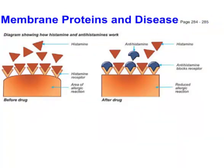Another example involves allergies. Some people take antihistamines, and here's how that works: the cell membrane has receptors for a molecule called histamine, shown here as triangles. When histamine molecules, released by damaged cells, arrive at your cell membrane, they fit into these receptors and cause your allergic reaction — your cells swell, ooze fluid, and you get itchy eyes and a runny nose.